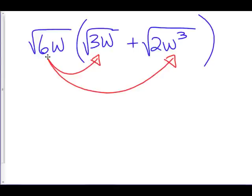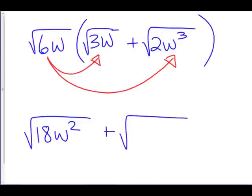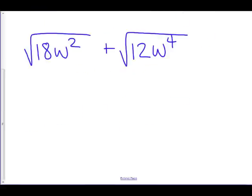Now, root 6w times root 3w. That's root 18w squared, because 6 times 3 is 18, and w times w is w squared. 6 times 2 is 12, and w times w cubed is w to the 4th. Now I have to simplify the square root of 18w squared plus the square root of 12w to the 4th.